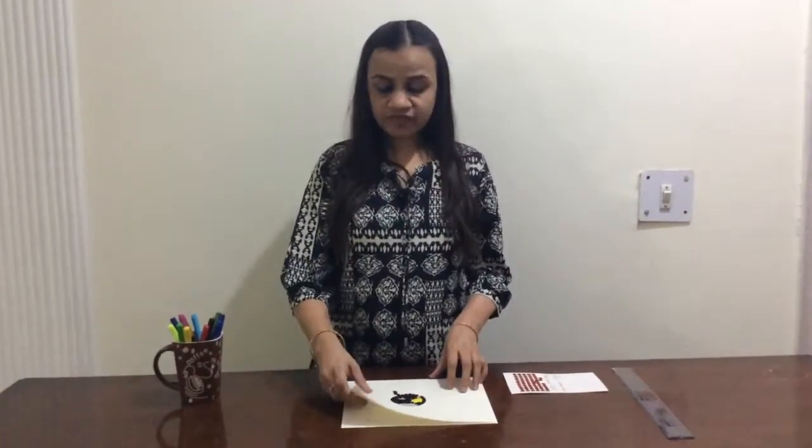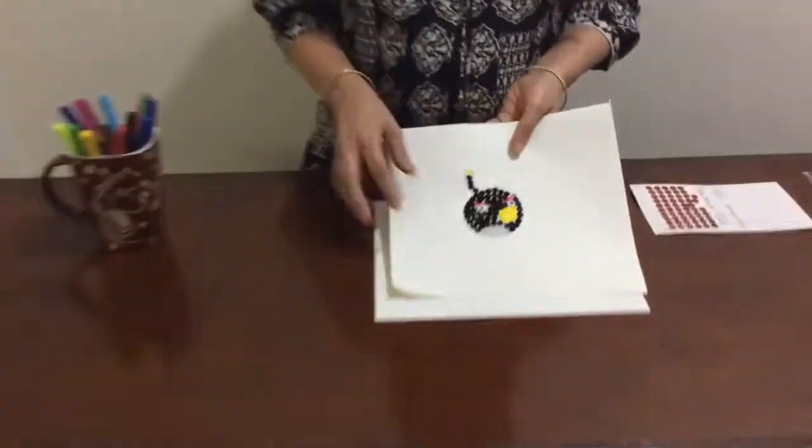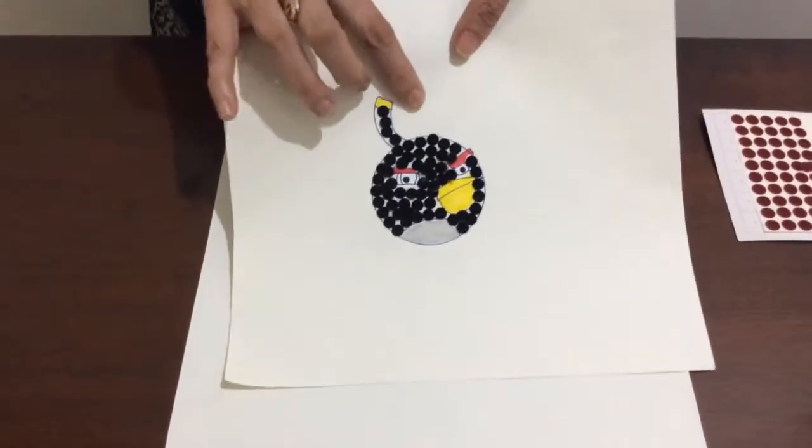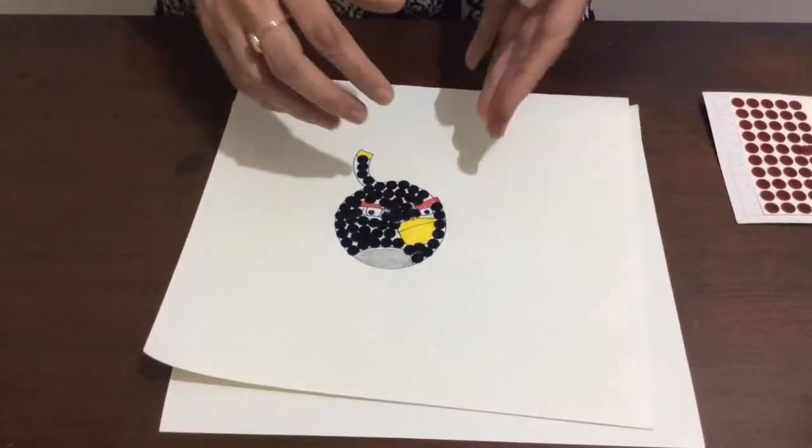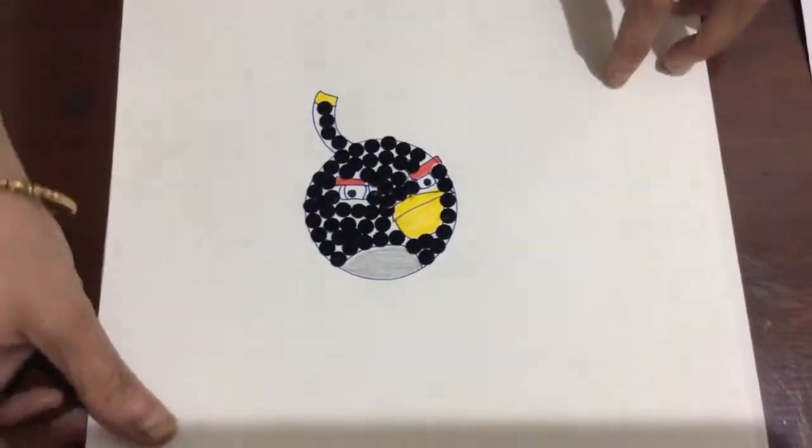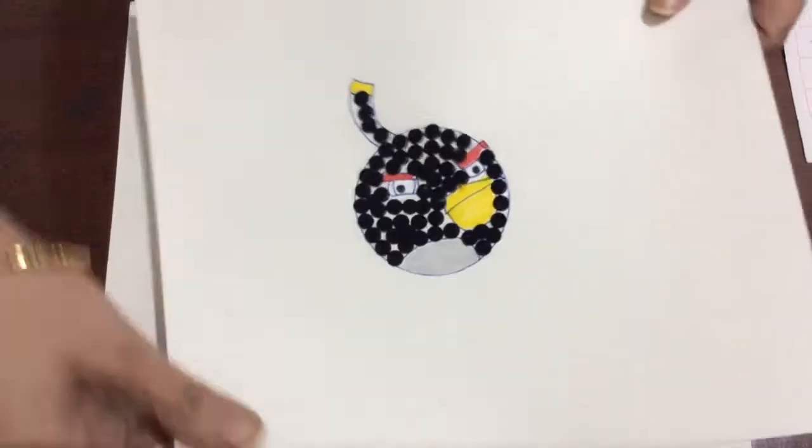For this activity today I have chosen the cartoon figure of Bomb. This is from Angry Birds. You can ask your child to choose any figure of his or her choice and we can paste bindis into that figure.